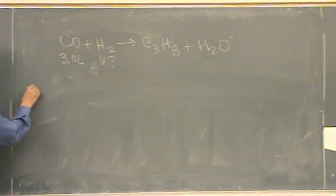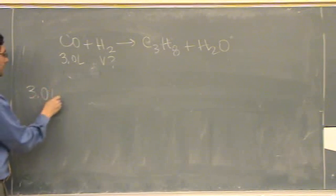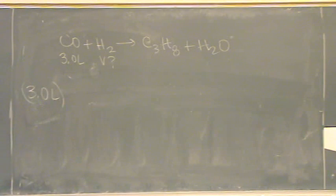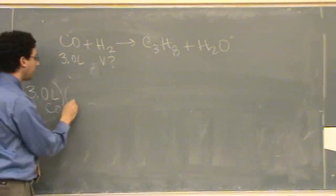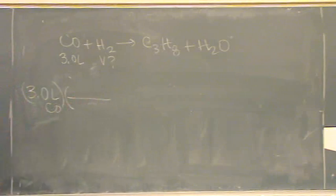So I would just think stoichiometry. 3 liters, it's at STP, so I can use volume to volume ratios. 3 liters of CO. And I have, oh let's balance this.